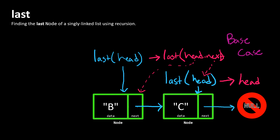The nice thing is we've actually got an answer to that solution. When we say what is the last of head when head is this particular node here, it's head. So the answer would be head again. And this is our recursive case.